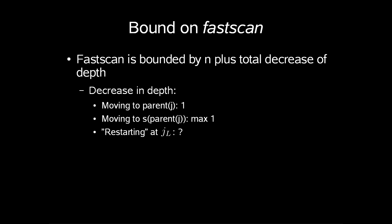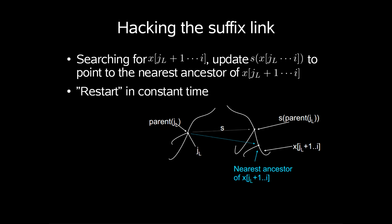Now, we need to restart at jl. So, how much time will those take? Here we introduce a little hack on the suffix link. When searching for jl plus 1 up to i, update suffix link of x[jl..i] to point to the nearest ancestor of x[jl+1..i], so we can restart in constant time.